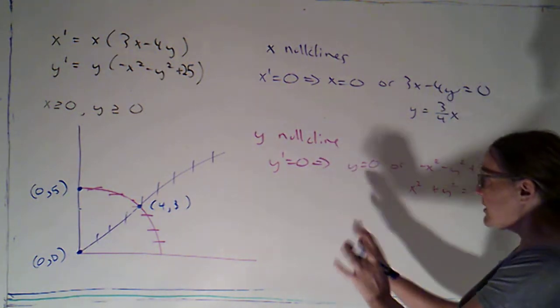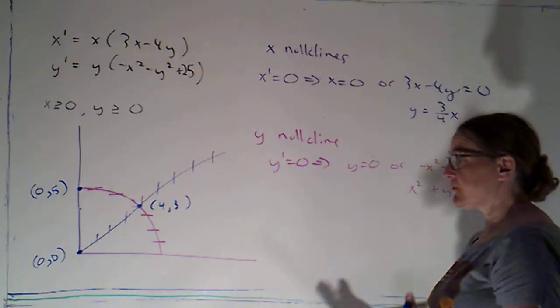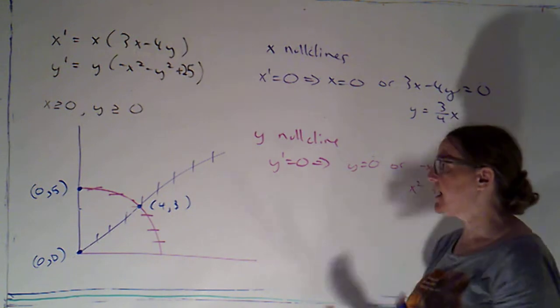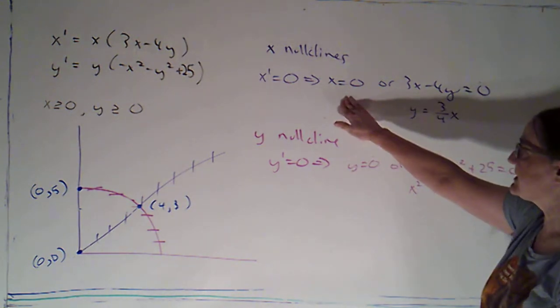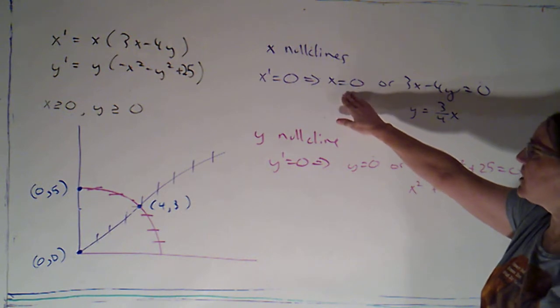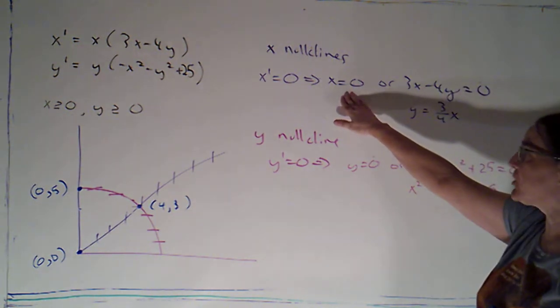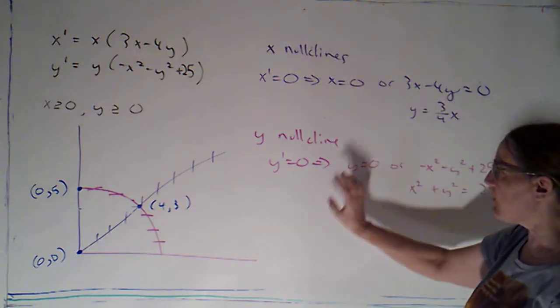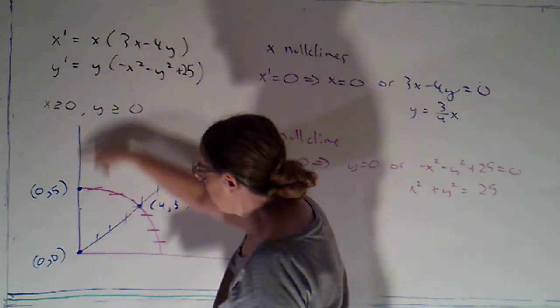So now that I've drawn all the nullclines, I can start filling in some arrows for when we're going up and when we're going down or left and right. So let's just start along the x nullclines. Remember, along the x nullclines, I'm going to have vertical tangents. So I'm trying to figure out whether we're going up or down. So I know that x prime is zero. I'm concerned with what's the sign of y prime.